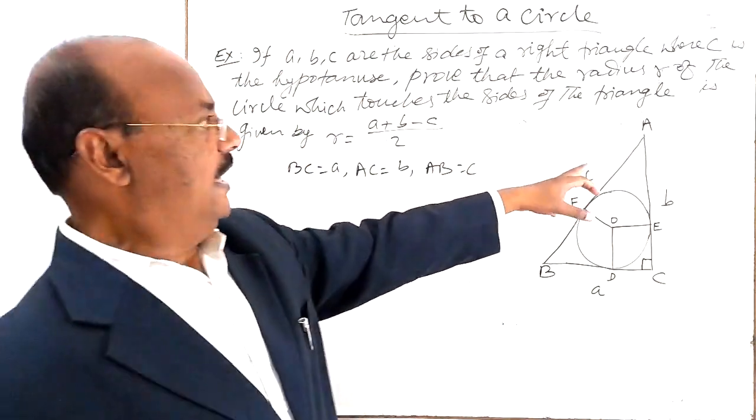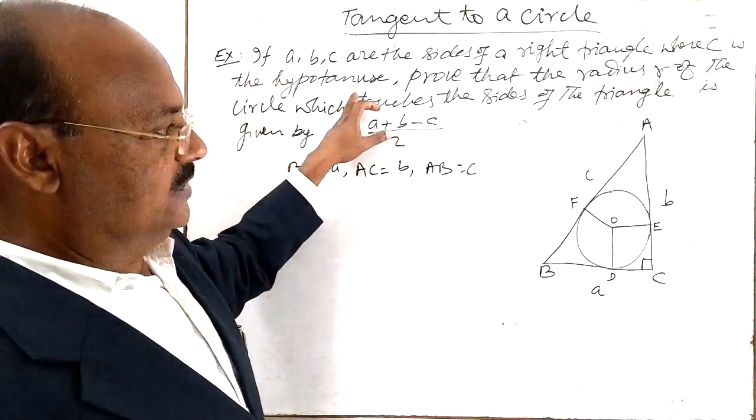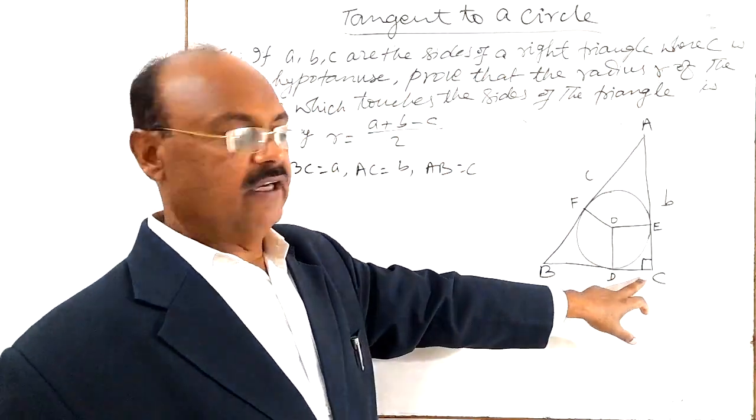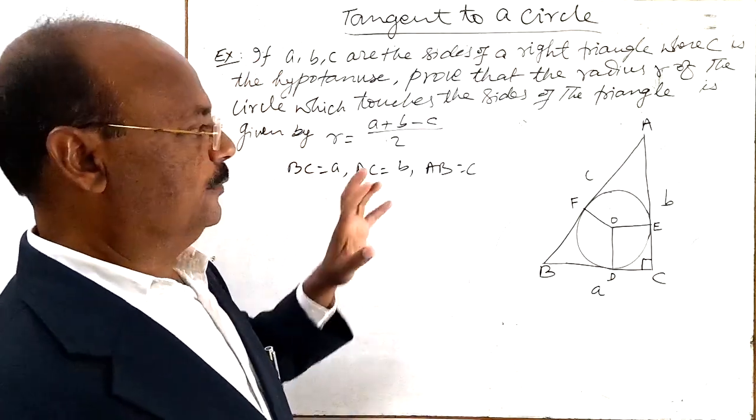And C is the hypotenuse, this is already given here. So obviously this is right angle. So angle C is equal to 90 degree here, correct?